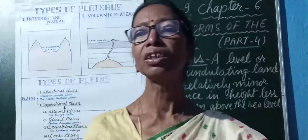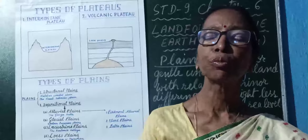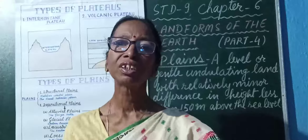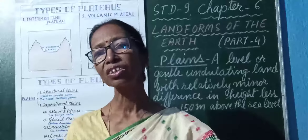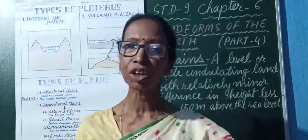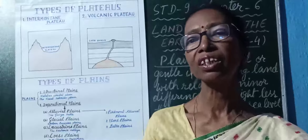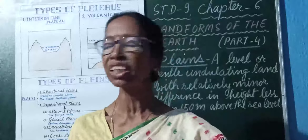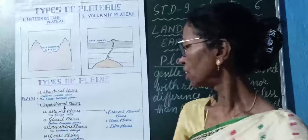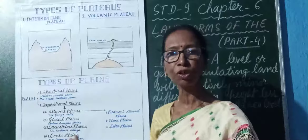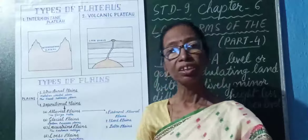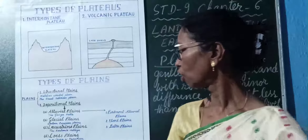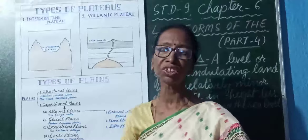Next is the lacustrine plain. A lacustrine plain is formed due to the deposition of sediments brought by rivers into shallow lakes. Between the mountains, where shallow lakes are found, rivers bring lots of sediments from the mountains, which are deposited and form plains known as lacustrine plains. A good example is the Kashmir Valley, where such plains are found.